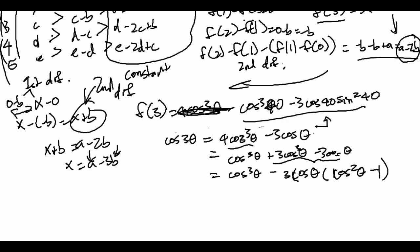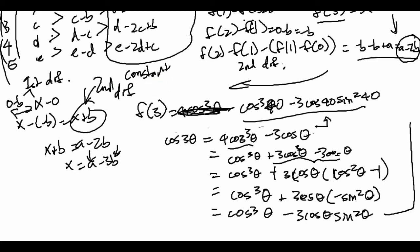This would be cosine cubed theta plus 3 cosine theta negative sine squared theta, which would be cosine cubed theta minus 3 cosine theta sine squared theta. And guess what? That looks exactly like the expression we have.